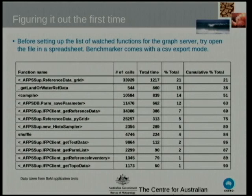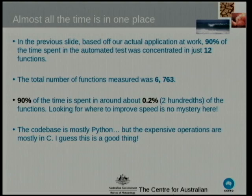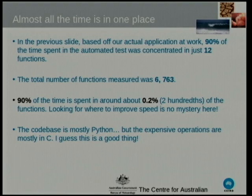These are some numbers from work. This is a hybrid Python-C system, and these are our most expensive functions — and none of them are Python functions. They're all actually C functions. So straight away it's interesting, because I don't really need to benchmark my Python; it turns out I probably need to go upgrade some old, crufty C libraries. Almost all of the time is in one place. This is the 99.98% to 0.02% rule — just 12 functions taking 90% of the time out of 6,700 functions. You know exactly where to look.